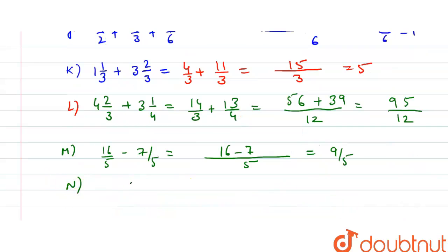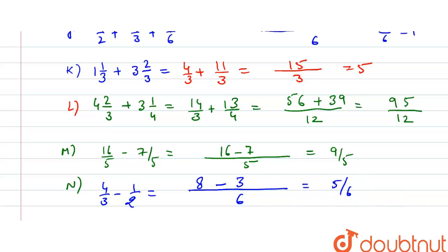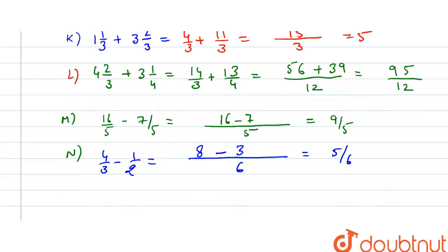Part (n) is 4/3 − 1/2. Taking the LCM of 3 and 2, which is 6: 2 × 4 = 8 and 3 × 1 = 3. So 8 − 3 = 5, giving 5/6. This is the answer. We have now solved all the questions. Thank you.